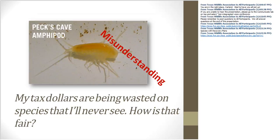Another myth: 'My tax dollars are being wasted on species I'll never see.' When the Endangered Species Act was passed in 1973, Congress determined that these species of fish, wildlife, and plants are of aesthetic, ecological, educational, historical, recreational, and scientific value to the nation and its people. Endangered species depend on clean air, water, and a healthy environment just as we do. Protecting these species and their habitats provides value even if you never see them — everything's connected. These species are indicators of the health of the environment in which we live.